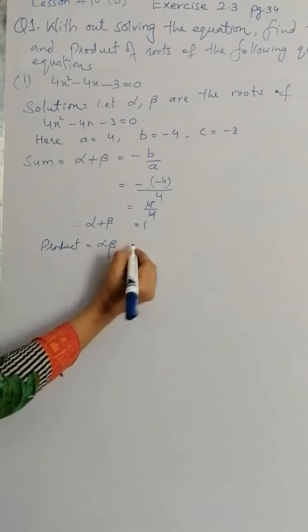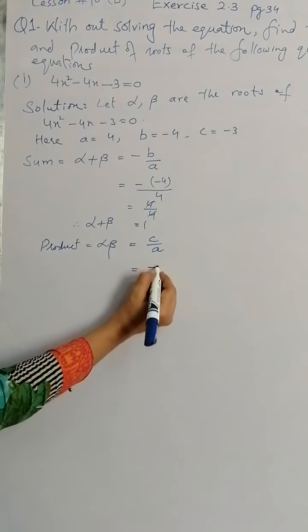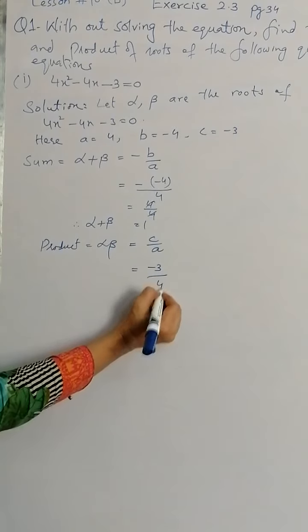Similarly, for product of roots, alpha into beta, we use the formula c by a. c is minus 3, while a is 4.